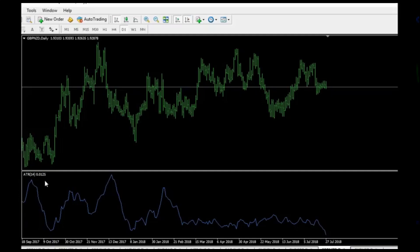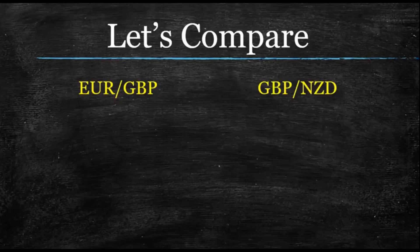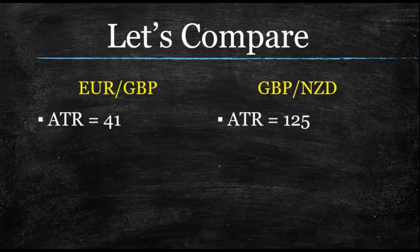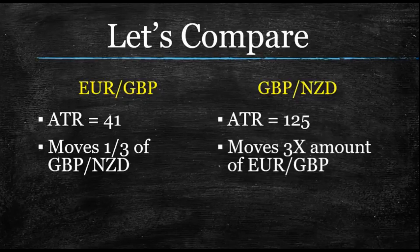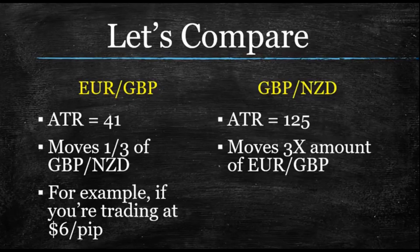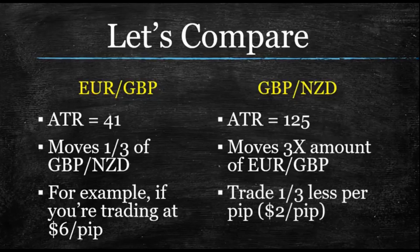Let's compare the two. The ATR of the euro pound was 41; on the pound kiwi it was 125. One is about three times more than the other. We understand that the euro pound is moving about a third of the speed of the pound kiwi, and conversely the pound kiwi is moving about three times the amount of the euro pound. So how do we trade it? Pretty simple — if you're trading the euro pound at $6 a pip, you trade the pound kiwi at a third less. If you're putting $6 a pip here, you put $2 a pip here, and your results are going to be very similar.